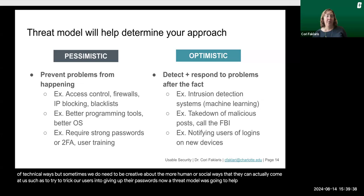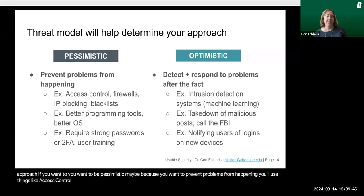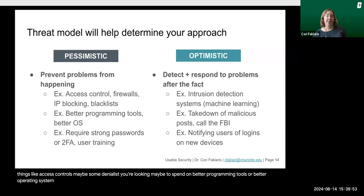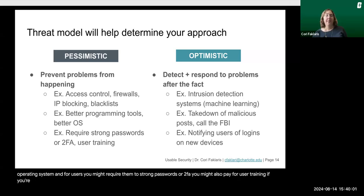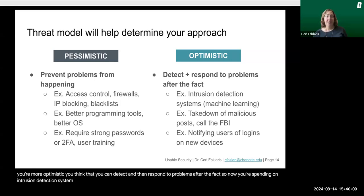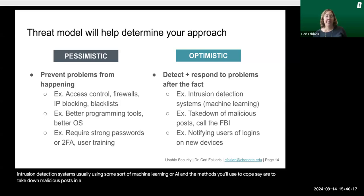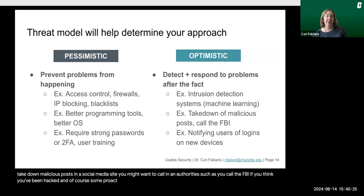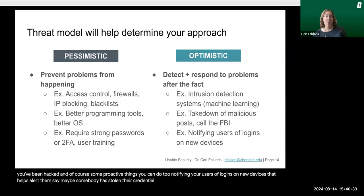A threat model is going to help you determine your approach. If you want to be pessimistic, maybe because you want to prevent problems from happening, you'll use things like access controls and denylists. You're looking to spend on better programming tools or a better operating system. For users, you might require them to use strong passwords or two-factor authentication. You might also pay for user training. If you're more optimistic, you think that you can detect and then respond to problems after the fact. So now you're spending on intrusion detection systems, usually using some sort of machine learning or AI. The methods you'll use to cope include taking down malicious posts on a social media site, calling in authorities like the FBI if you think you've been hacked, and notifying your users of logins on new devices to alert them if somebody has stolen their credentials or even stolen their device.